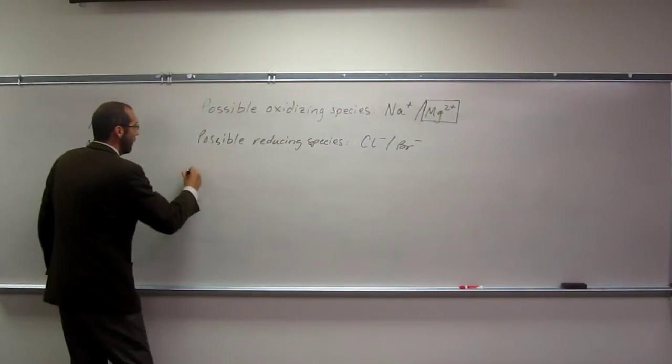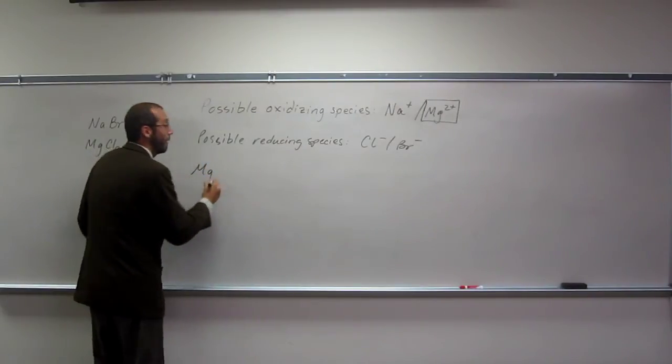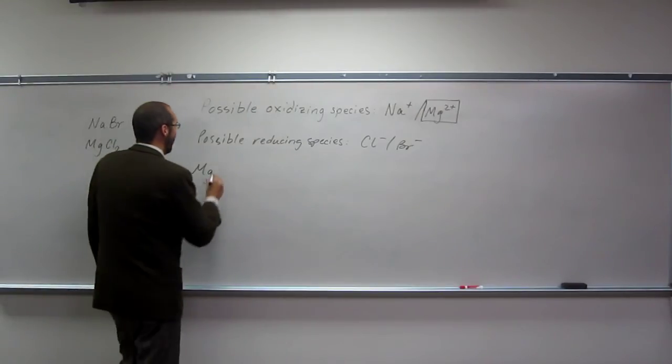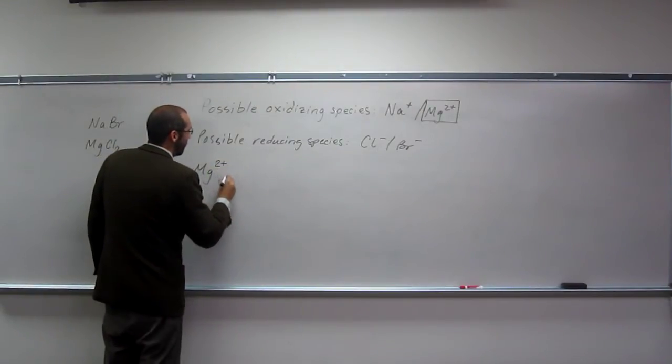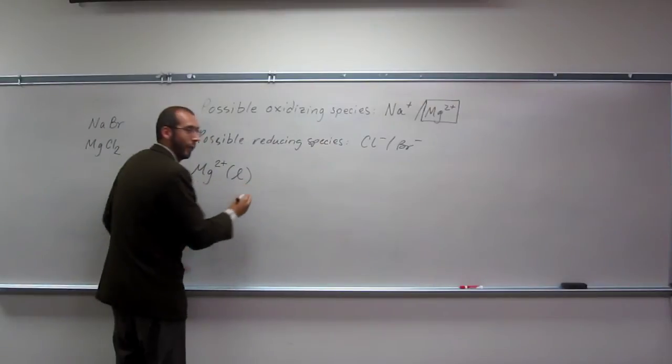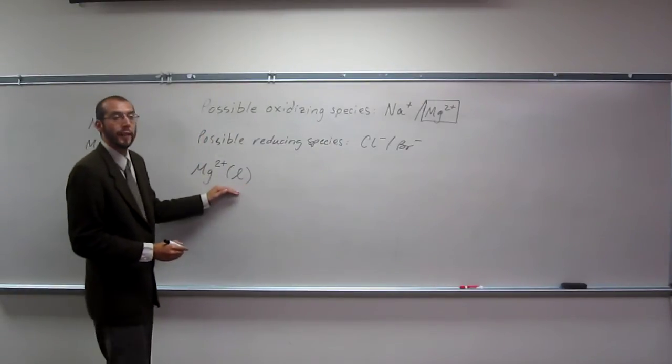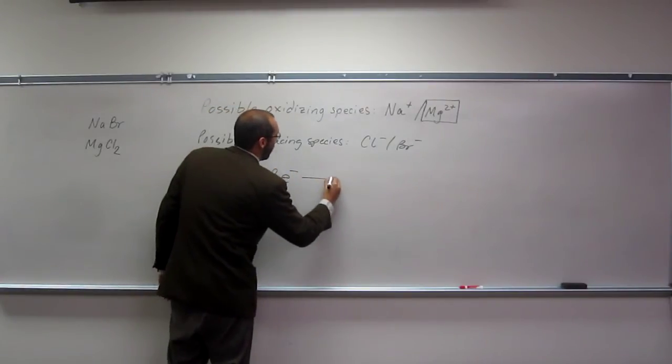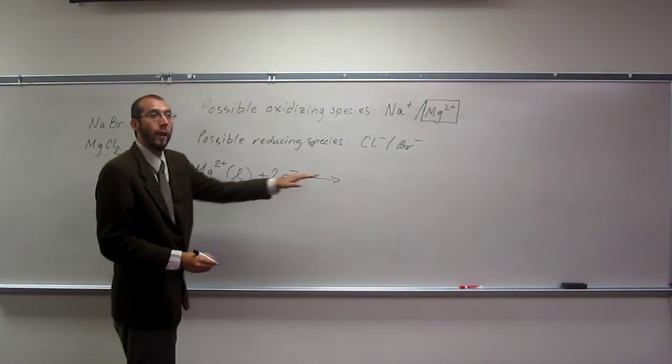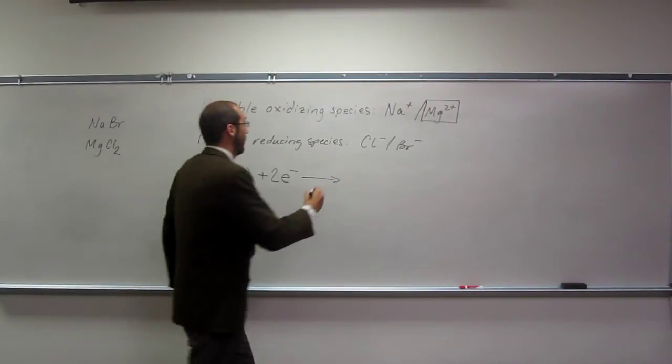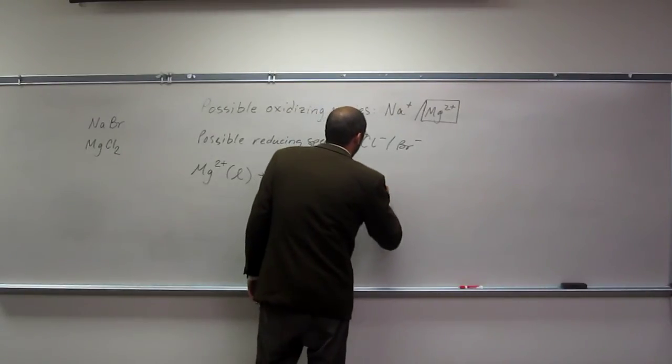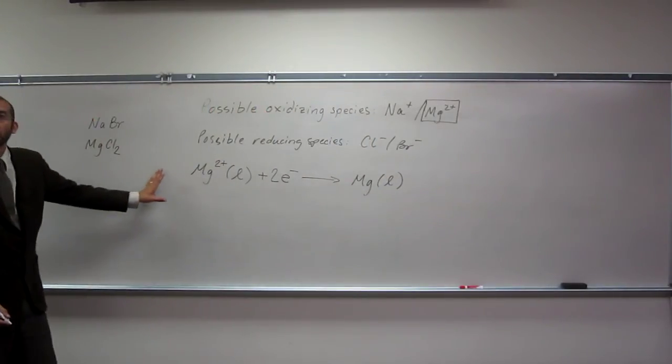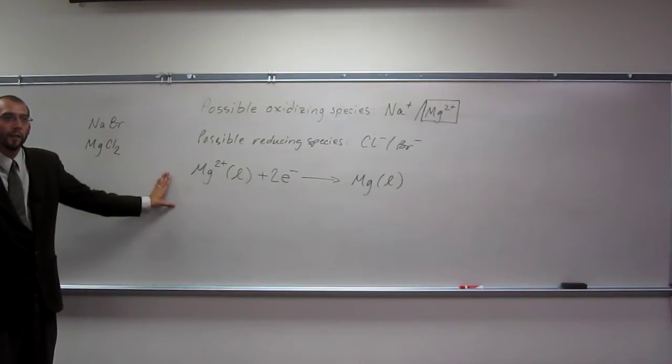Remember, this is in a molten salt mixture. So Mg 2+ liquid is getting reduced by two electrons, and it's going to magnesium metal in the liquid form: Mg2+(l) + 2e- → Mg(l). Is everybody okay with the logic process there?